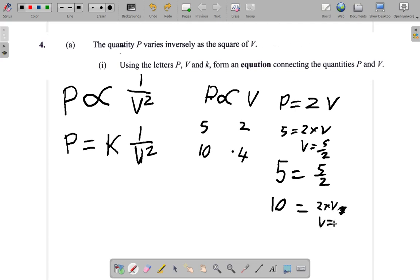So you would say V is 5. So 10 equals 2 times 5. So 2 is a constant here, and you would have P equals 2V.